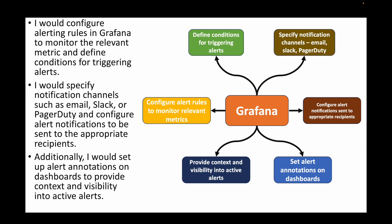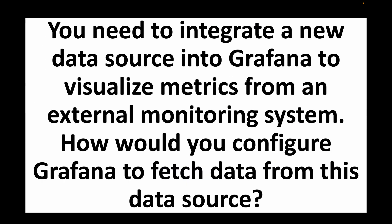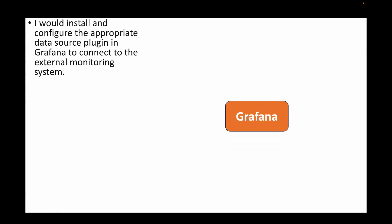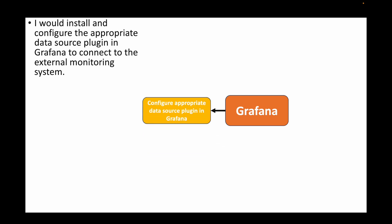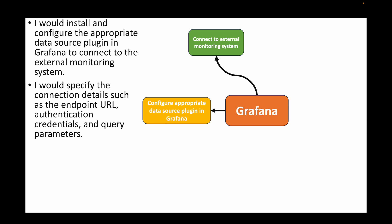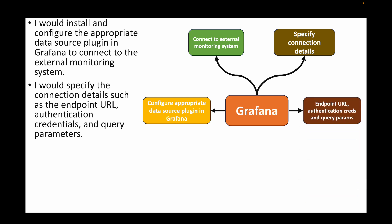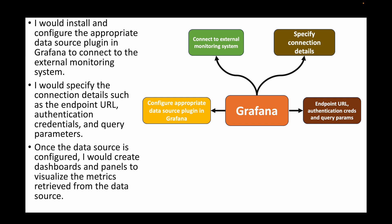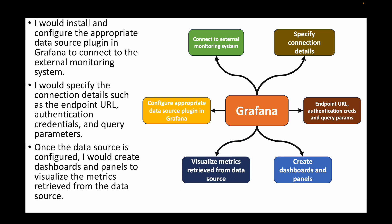The next question: you need to integrate a new data source into Grafana to visualize metrics from an external monitoring system — how would you configure Grafana to fetch data from this external data source? We will install and configure the appropriate data source plugin, connect Grafana to the external monitoring system by specifying connection details such as the endpoint, authentication credentials, and query parameters. Once the data source is configured, we can create dashboards and panels to visualize the metrics retrieved from this external data source.